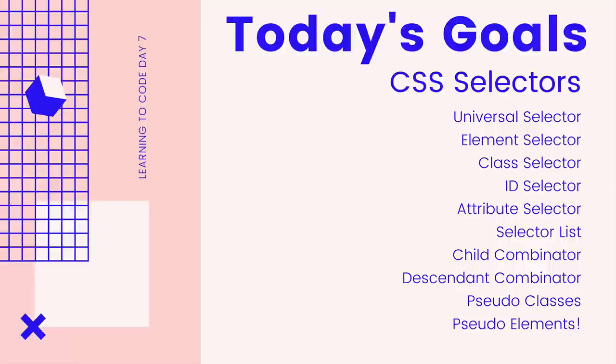Hey everyone, it's Colt, and today we're talking about CSS selectors. Specifically, the essential, most important selectors, combinators, pseudo-classes, and pseudo-elements that you should try and know, or at least be familiar with. There are quite a few of them, and I'm going to try and whittle it down and highlight the most important stuff.